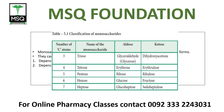Six carbon ko hum kehte hain hexose, jismein aldehyde wala aldose humhare paas glucose hai, aur ketose humhare paas fructose hai. Seven carbon ko hum naam de rahe hain heptose, jismein glucoheptose hum naam de rahe hain aldose ko, aur sedoheptulose hum naam de rahe hain ketose ko.